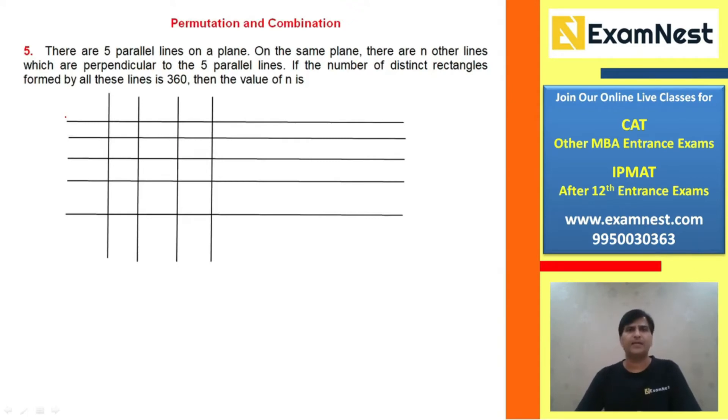There are five parallel lines on a plane - a standard permutation and combination question. On the same plane, there are n other lines which are perpendicular to the five parallel lines. We don't know how many lines there are. If the number of distinct rectangles formed by all these lines is 360, then the value of n is.